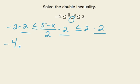What do we get? Negative two times two is negative four, less than or equal to, my twos cancel there, and I have five minus x, less than or equal to, two times two is four.